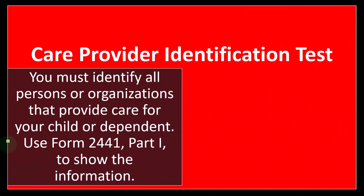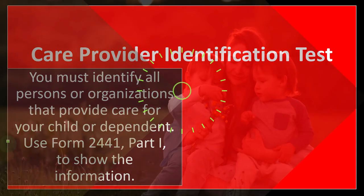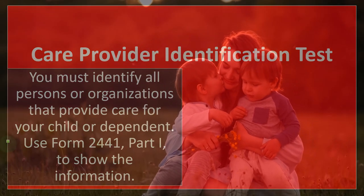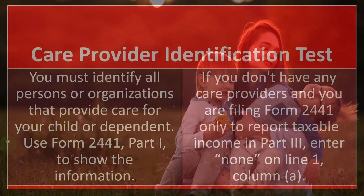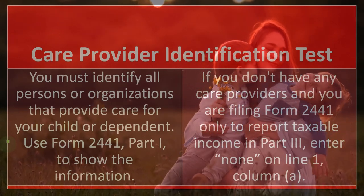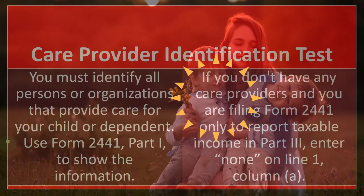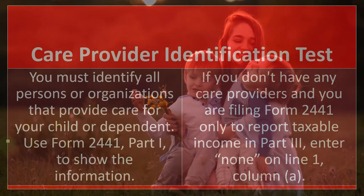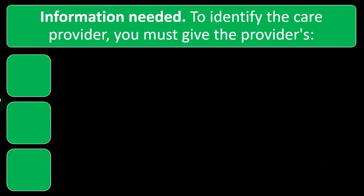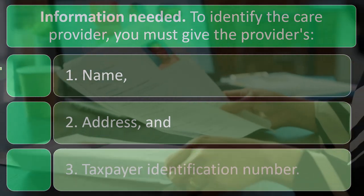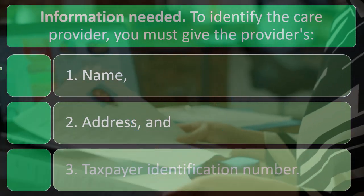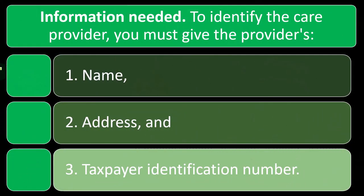Care provider identification test: you must identify all persons or organizations that provide care for your child or dependent. Use Form 2441, Part 1, to show this information. If you don't have any care providers and are filing Form 2441 only to report taxable income in Part 3, enter 'none' in line 1, column A. To identify the care provider, you must give the provider's: one, name; two, address; and three, taxpayer identification number.